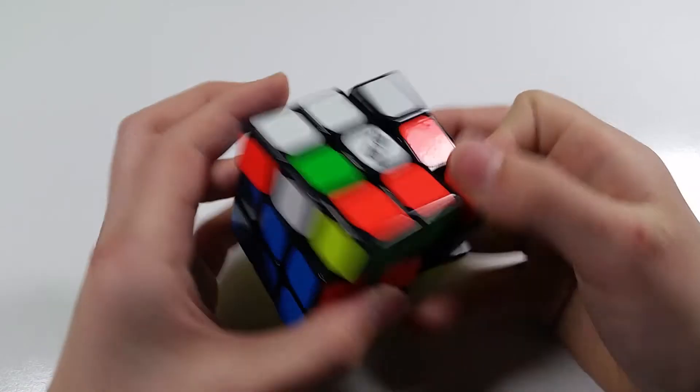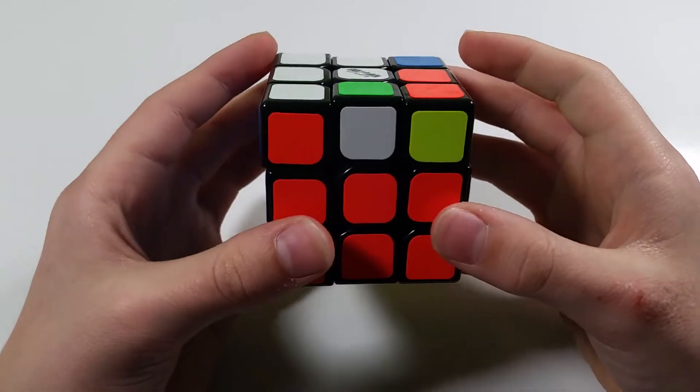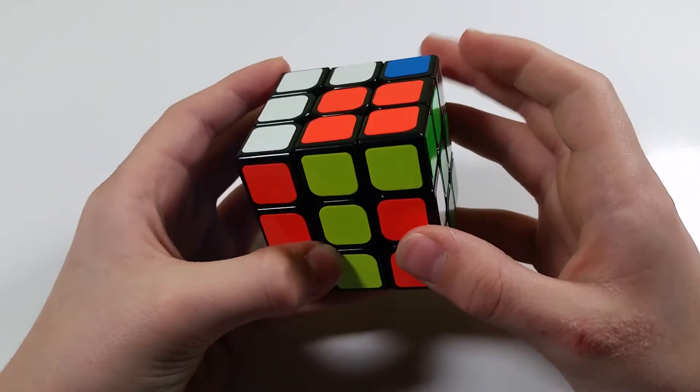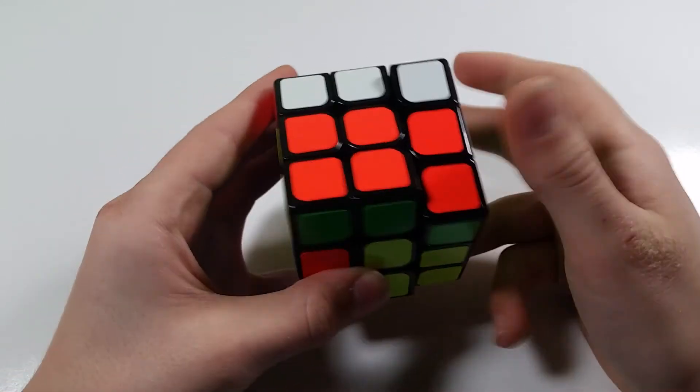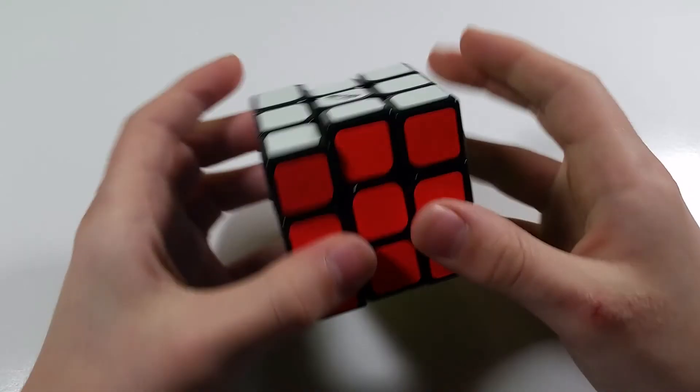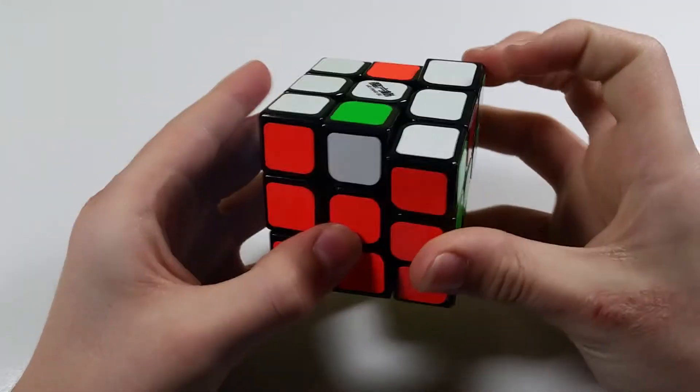So here is the case again. R U R' U' which is sexy move, M' which is really simple. Then you see this big block here and you just do a U R U' R' to insert it. So at full speed, it looks like this.